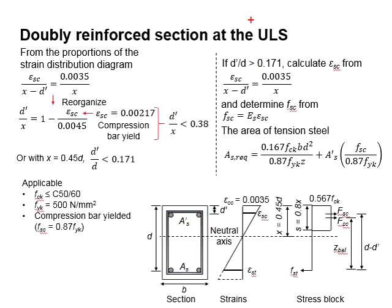At the ultimate limit state, there are two types of possibilities. The compressive steel bar may have yielded or may not yield.